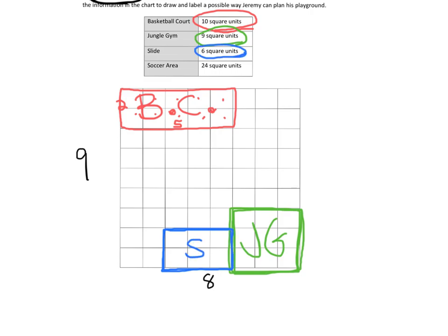And then our soccer area has got to be 24 square units. And let's do that, we'll do it in purple. So our soccer area is 24 square units. So there's a couple of choices we could do. We could do 3 by 8 because that's 24. Or we could do 4 by 6 because that's 24. So we have some choices. I'll do a 4 by 6.